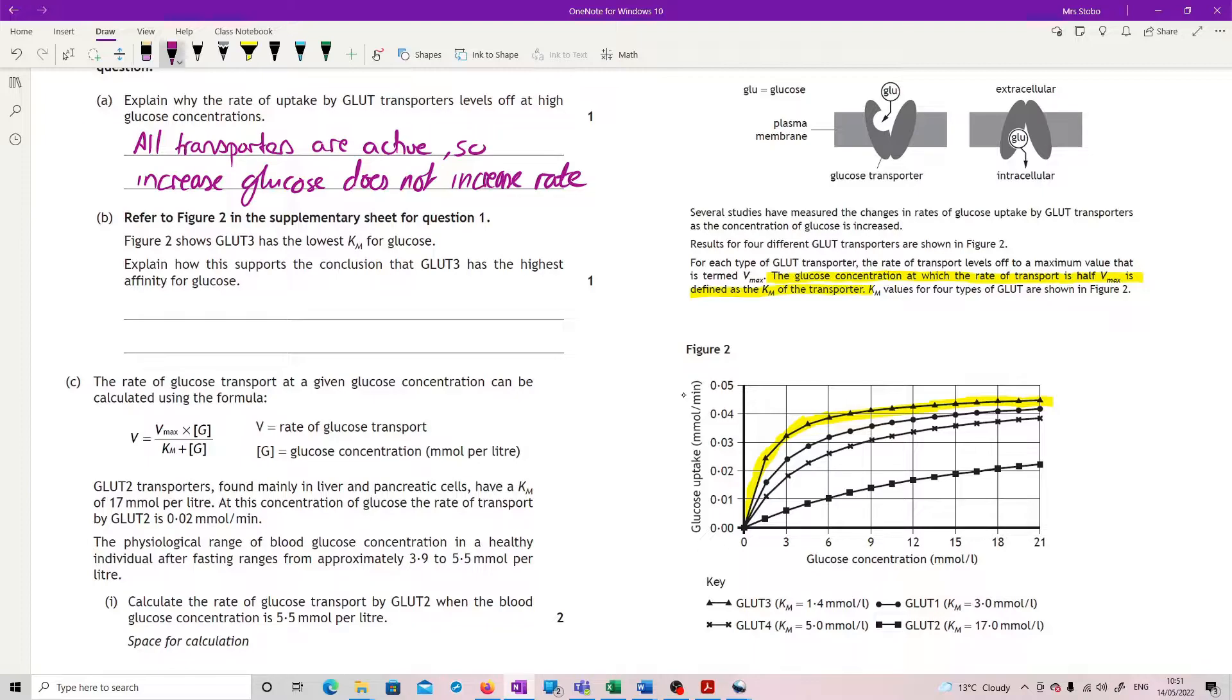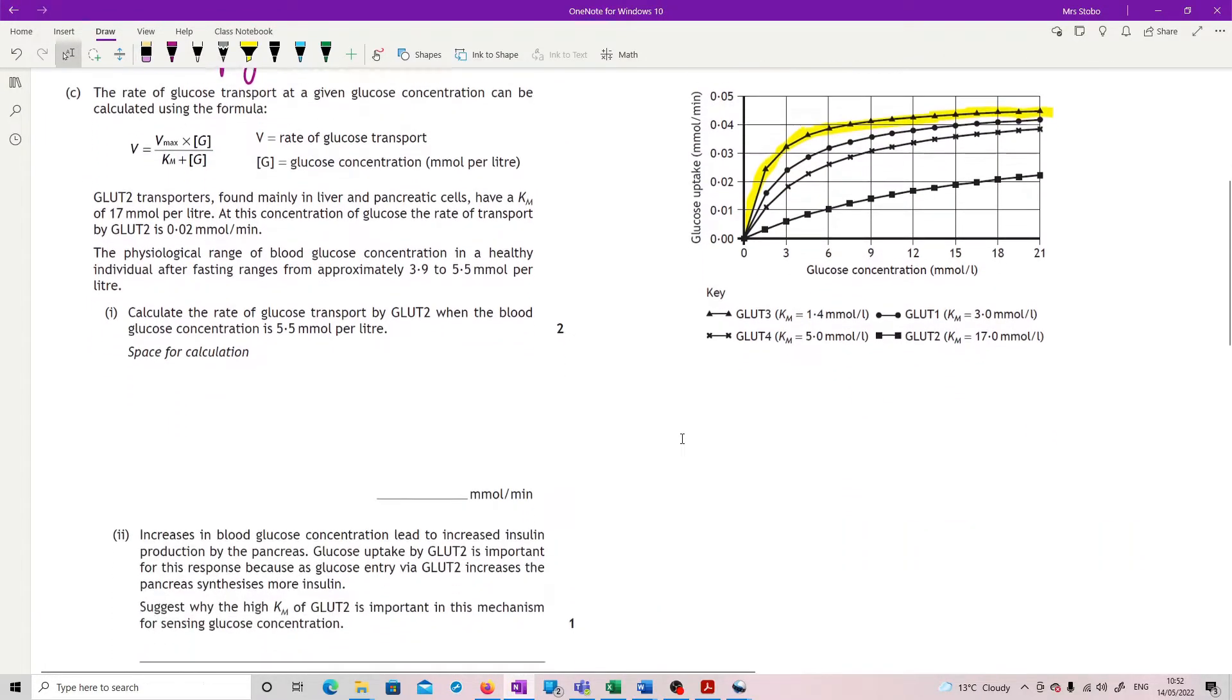Explain how it supports it has the highest affinity. It has the fastest increase in activity. You could say at low levels of glucose. Okay, that's what we're looking for you to recognize.